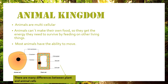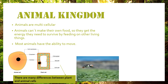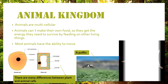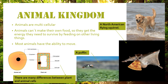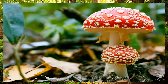Animal kingdom. Animals are multicellular. Animals can't make their own food, so they get the energy they need to survive by feeding on other living things. Most animals have the ability to move. There are many differences between plant and animal cells. Here we have a puffin, a North American flying squirrel, and a golden retriever.